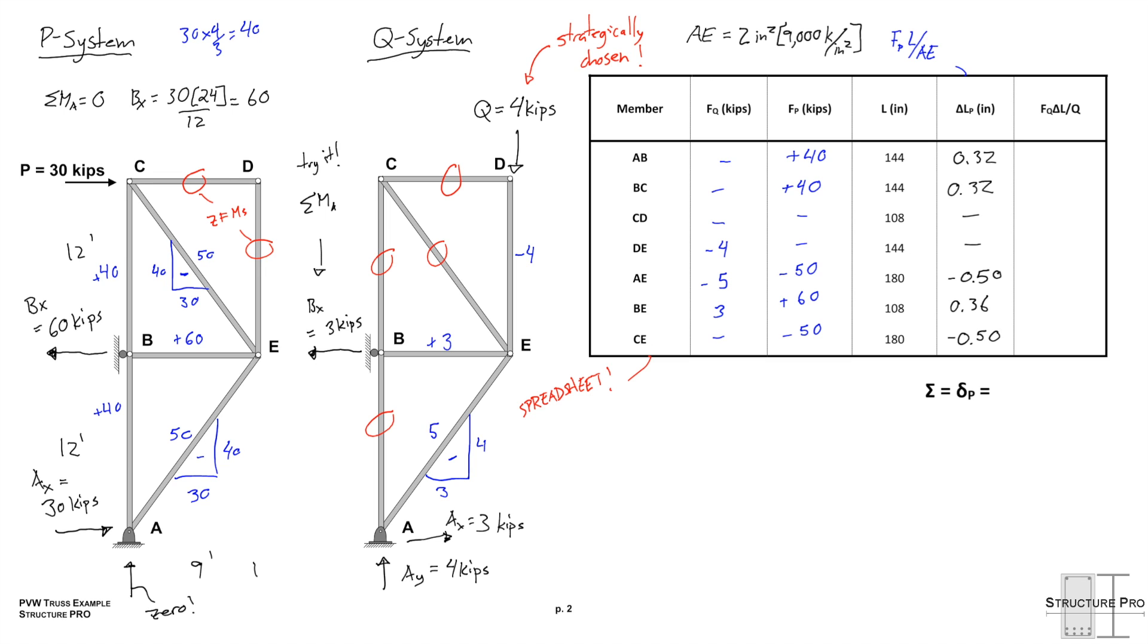Yes, I would recommend using a spreadsheet, by the way. Finally, the last column. We notice anything with an FP equals 0 or an FQ equals 0 ends up being 0 in this last column.